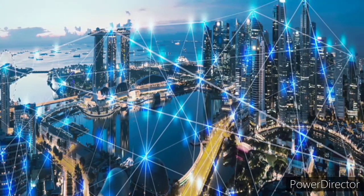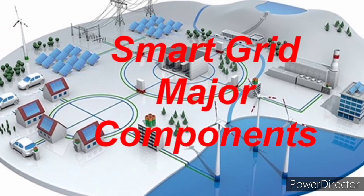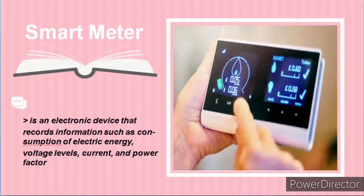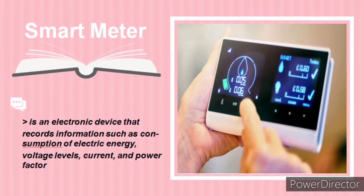Before we end, what are the major components of smart grid? These are the smart meter, the phasor measurement, the information transfer, and the distributed generation. Let's first talk about the smart meter.